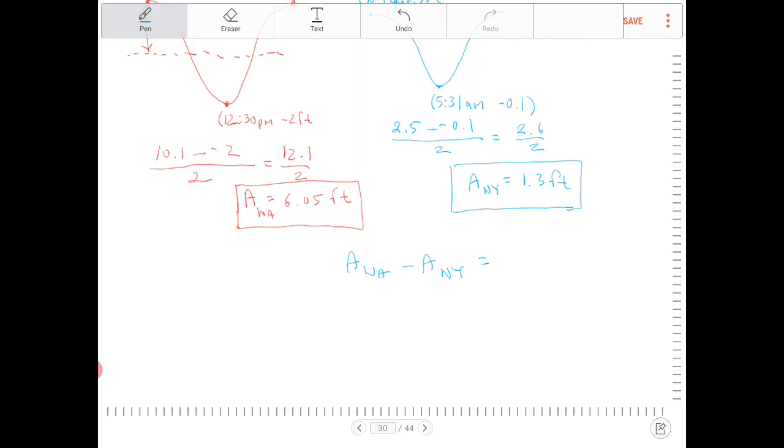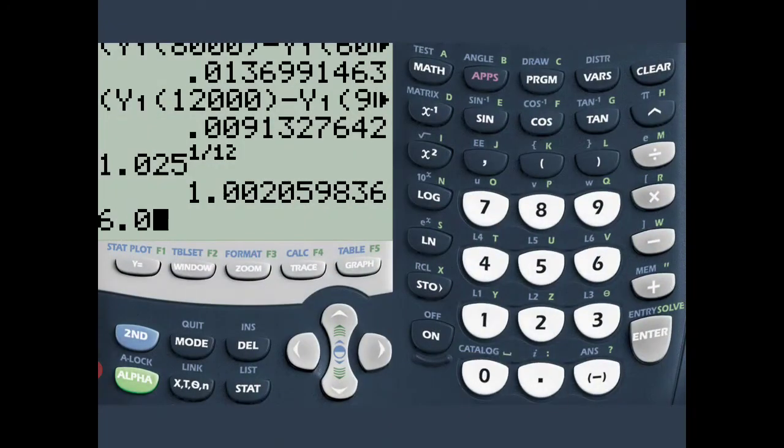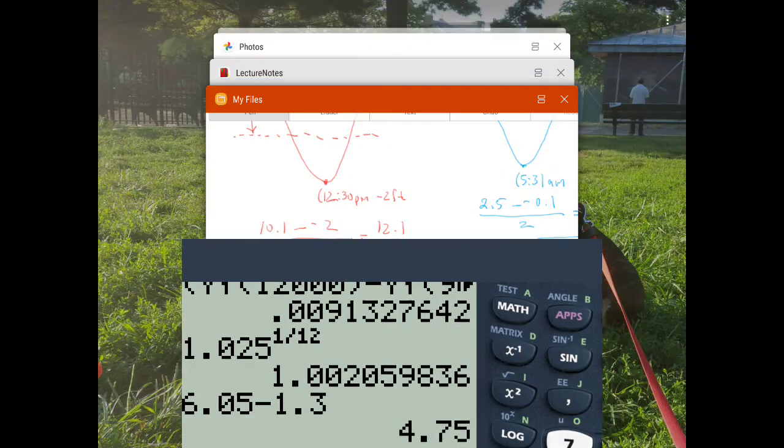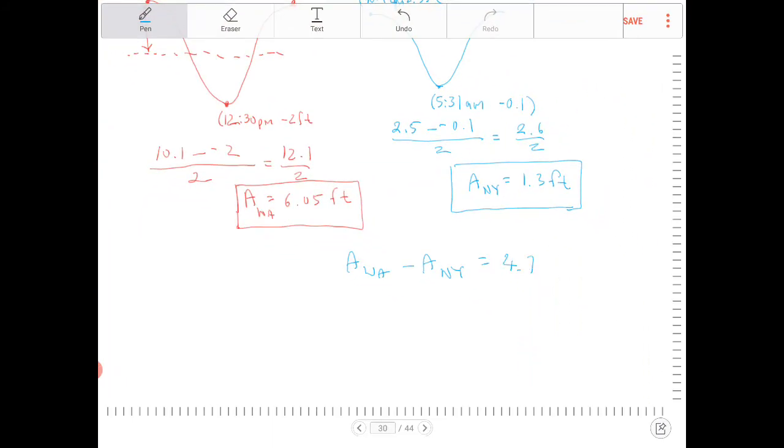6.05 minus 1.3. So 6.05 minus 1.3 equals 4.75. So it's 4.75 feet, that is the difference.